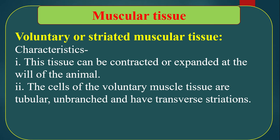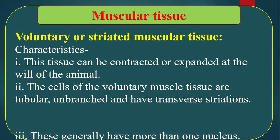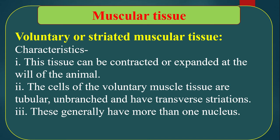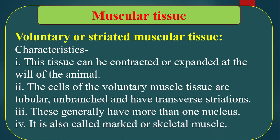The cells of the voluntary muscle tissue are tubular, unbranched, and have transverse striations. They generally have more than one nucleus. It is also called striated or skeletal muscle.